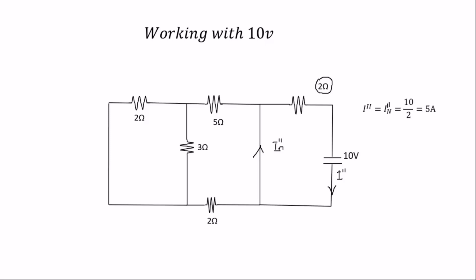With superposition, you find one current, then the other, and check the direction of each — whether you sum up or subtract depending on the direction. When you check the direction for the previous diagram, the first current opposes this direction, making it negative. So you get negative 0.525 amps plus 5 amps, which gives you 4.475 amps as the total Norton's current.